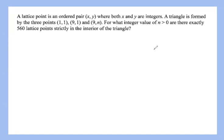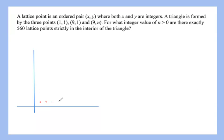We have a problem — number six on the target run — where three points are given as vertices of a triangle, and we want to find the value of n if there are 560 lattice points inside the triangle. Let's draw this out visually. We're given (1,1) as one vertex, (9,1) as another, and then a point at (9, n).